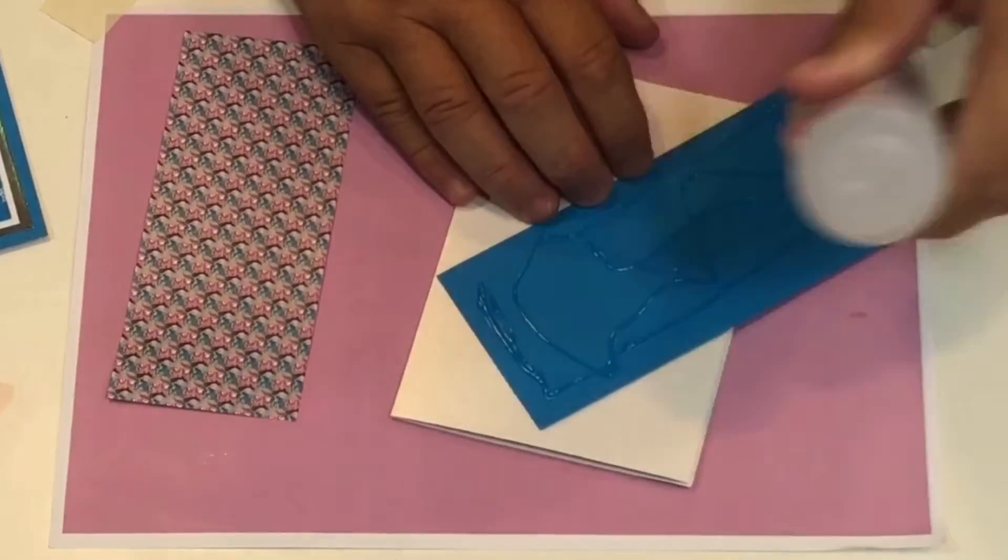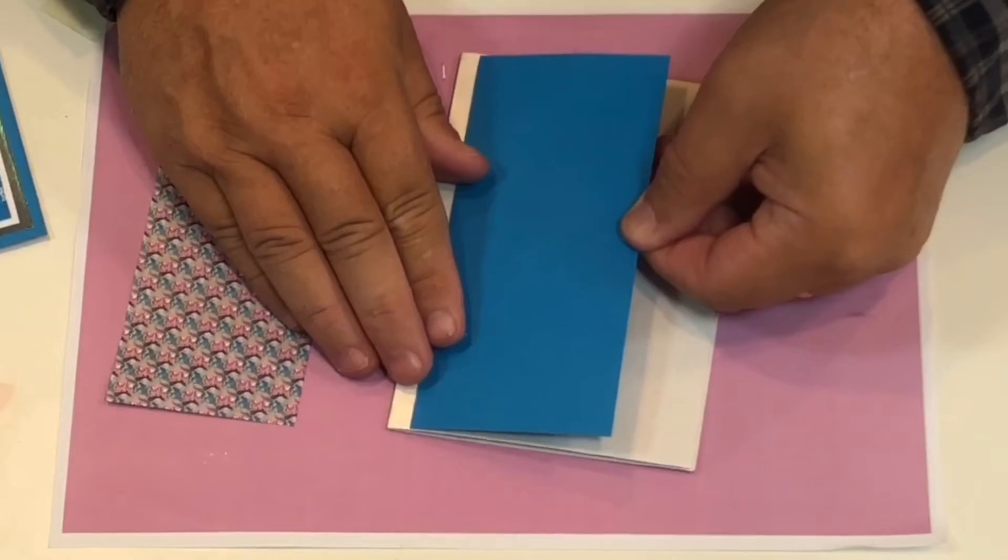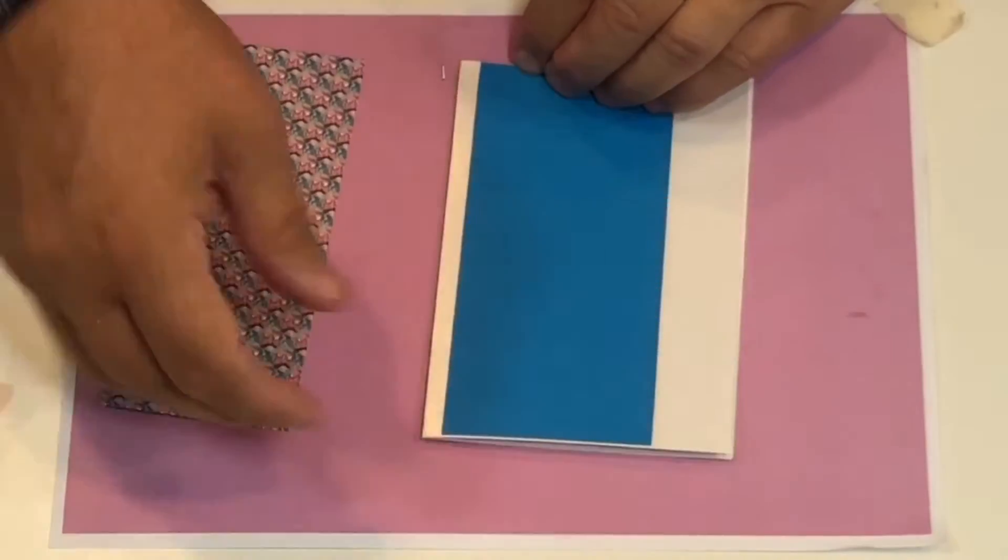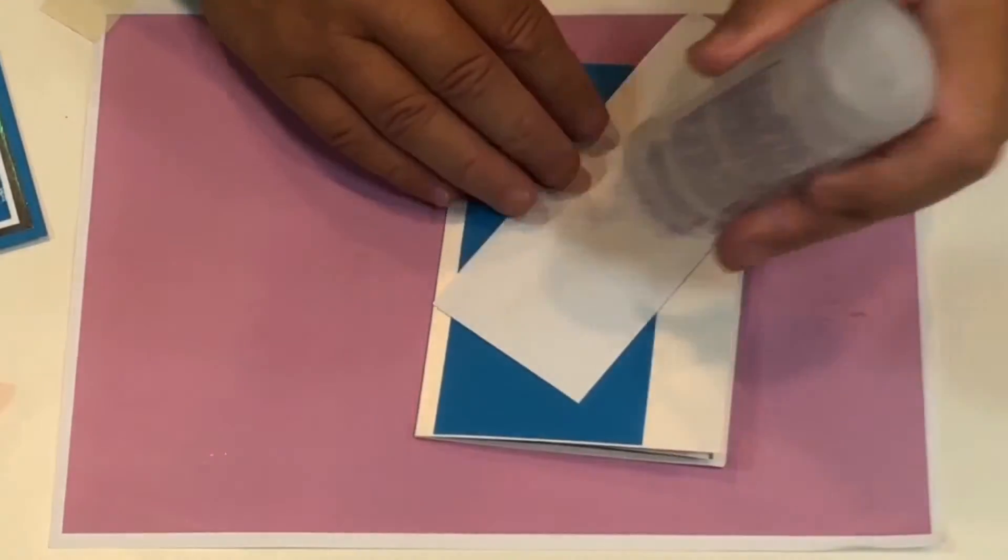I think I'll do it slightly off center. I've changed my mind mid-demo and that's going to go there like that. Add another scrap bit of backing paper here, cut that to size.